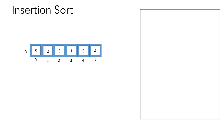Suppose we are given array A and we have to sort it using insertion sort. We start with the first element. Initially our sorted sub-array has 0 elements, therefore if we insert the first element into it, it will already be at its sorted position. So we can say that element 5 is already sorted in the sub-array.